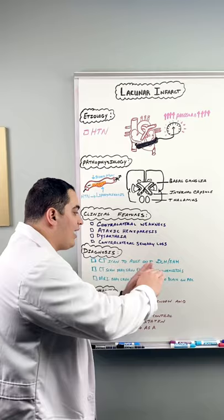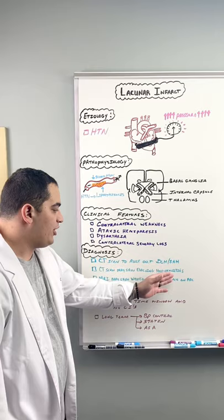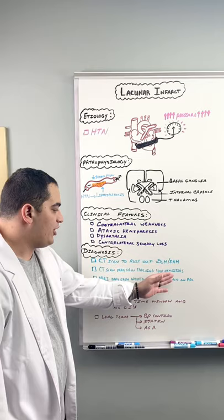The diagnosis can be made by first ruling out an ICH or subarachnoid hemorrhage through a non-contrast CT scan. As the infarct evolves, it may show hypodensities on the CT scan, and on MRI, it would show up white on DWI, black on ADC.